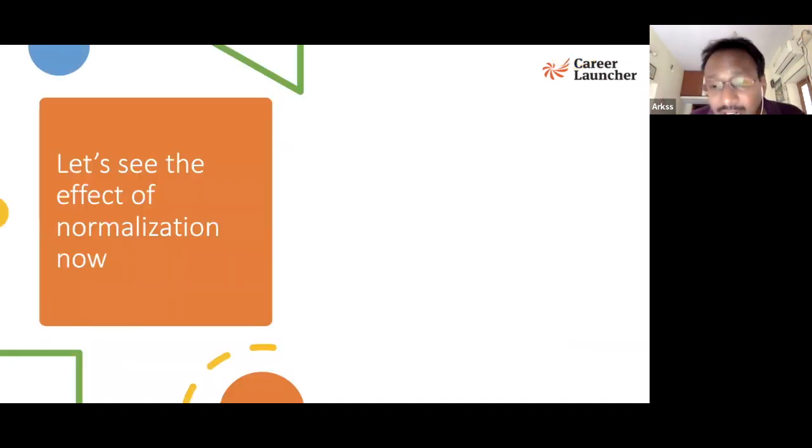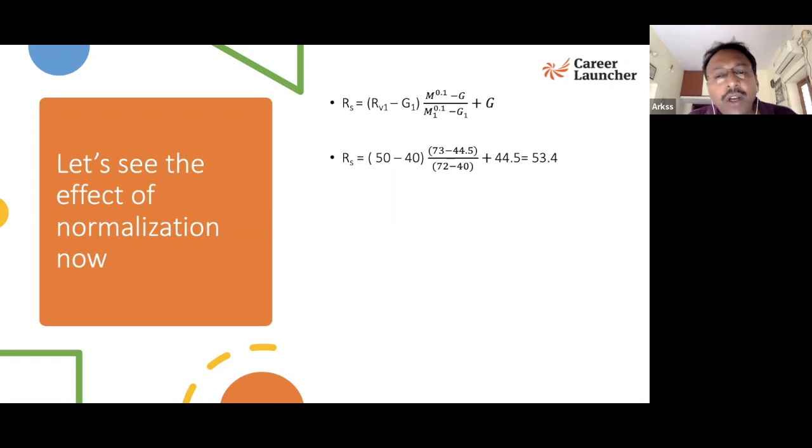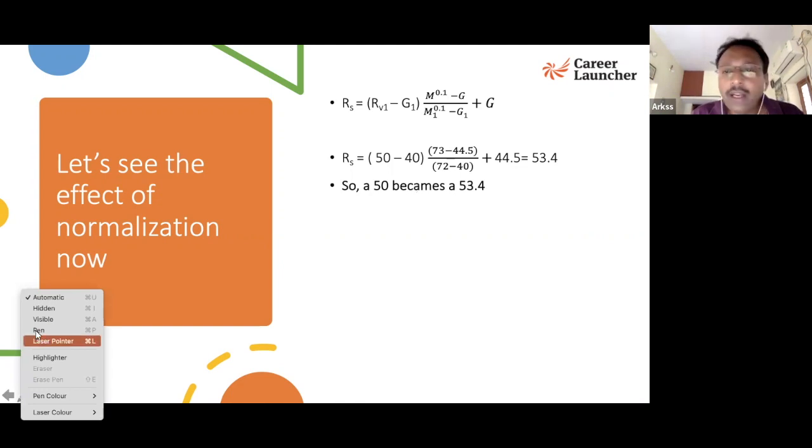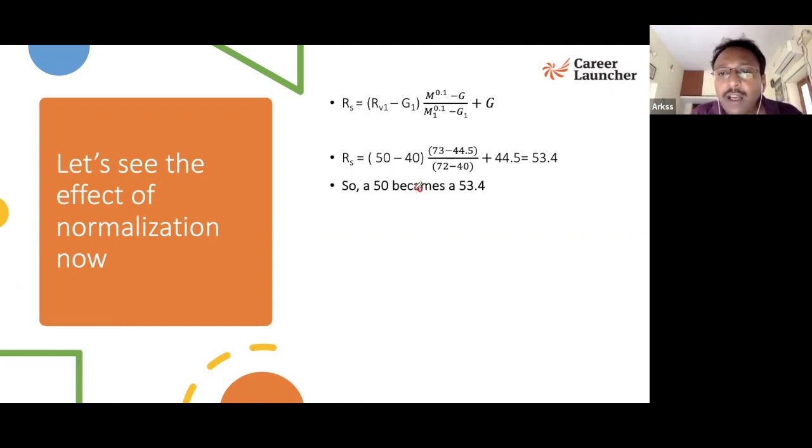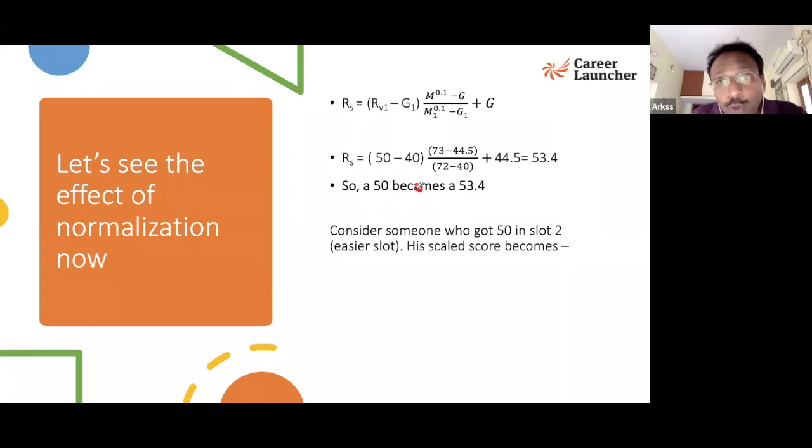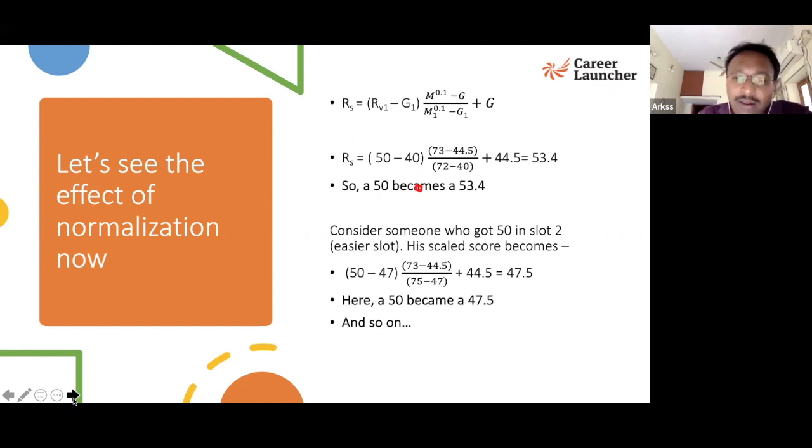Then what will happen? Let's see the effect of normalization. The same formula used - you started off with 50, remember. You will actually end up with 53.4. So a 50 becomes 53.4. And then someone who got 50 in slot 2, now it's an easier slot, what happens to him or her? His scale score becomes 47.5 and so on. A 50 became a 47.5 in slot 2, it scaled it down. And a 50 became a 53.4, it scales up.